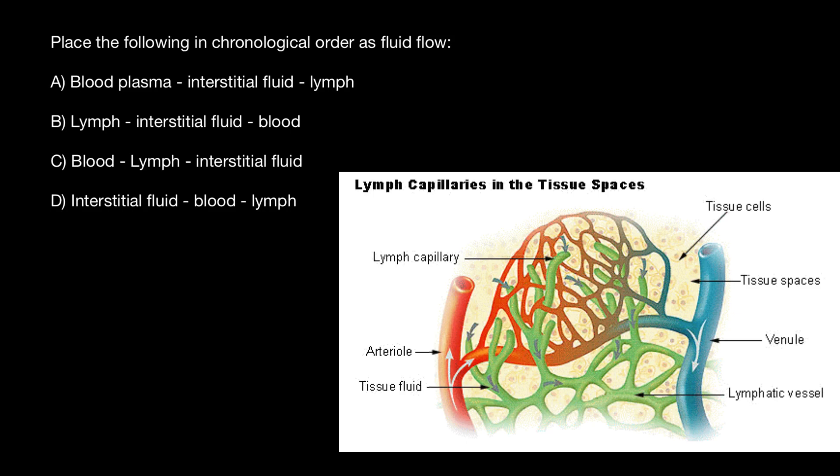In short: the liquid portion of the blood, referred to as plasma, becomes interstitial fluid once it exits the blood vessel and bathes the tissues. Interstitial fluid eventually flows into the lymphatic vessels where it is referred to as lymph. All lymph is eventually returned to the blood circulation at the subclavian veins. So the flow and name changes are: blood plasma, then interstitial fluid, then lymph — and as you see, this is answer A.